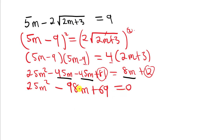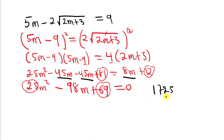Now we are having this quadratic equation. You can decide to use the quadratic formula or the factorization method — any method you are comfortable with. I want to use the factorization method, so I am going to multiply the coefficient of m squared, which is 25, by the constant 69, and that gives me 1725.